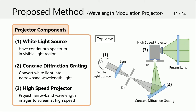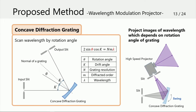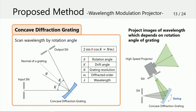The concave diffraction grating has a feature that it can scan wavelength by its rotation angle with two slits fixed. The relationship between rotation angle and wavelength of the gained light is expressed by this equation. In the proposed method, the high-speed projector projects images of wavelengths which depend on the rotation angle of the concave diffraction grating. Thus, the projector can project images of narrow band wavelengths while switching them at high speed by swinging the grating.